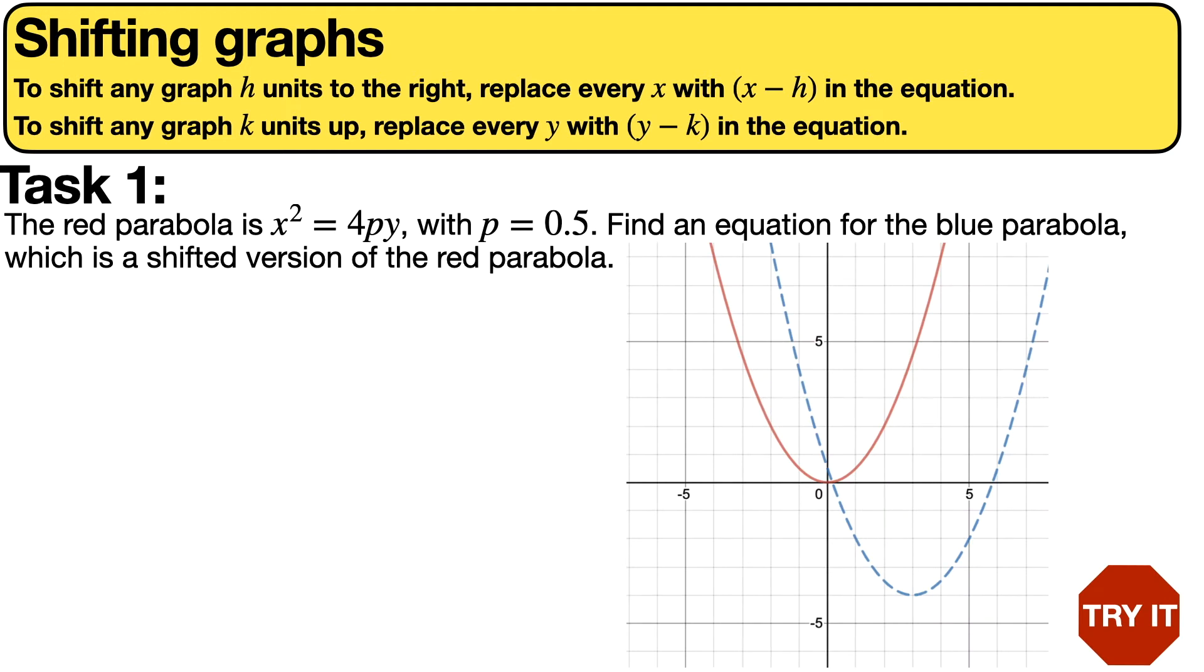We now have enough information to give you a task to try out. The red parabola is x² = 4py, where p = 0.5. Your task is to find an equation for the blue parabola, which is just a shifted version of the red parabola.